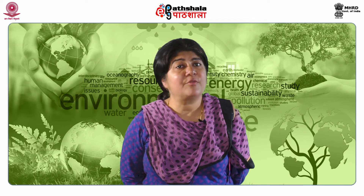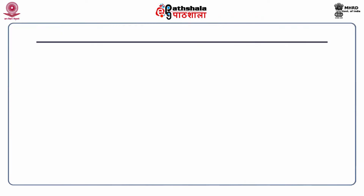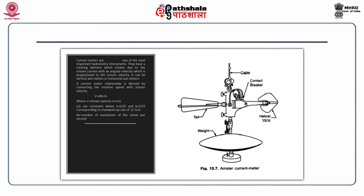We take readings to understand the flow upstream and downstream of the gauging site. A current meter is used to measure velocity. It rotates on its axle, and the number of rotations per second or minute is noted. Using the formula V = a·n·s + b, where a and b are calibrated instrument constants and n is the measured rotation count, we obtain the flow velocity.